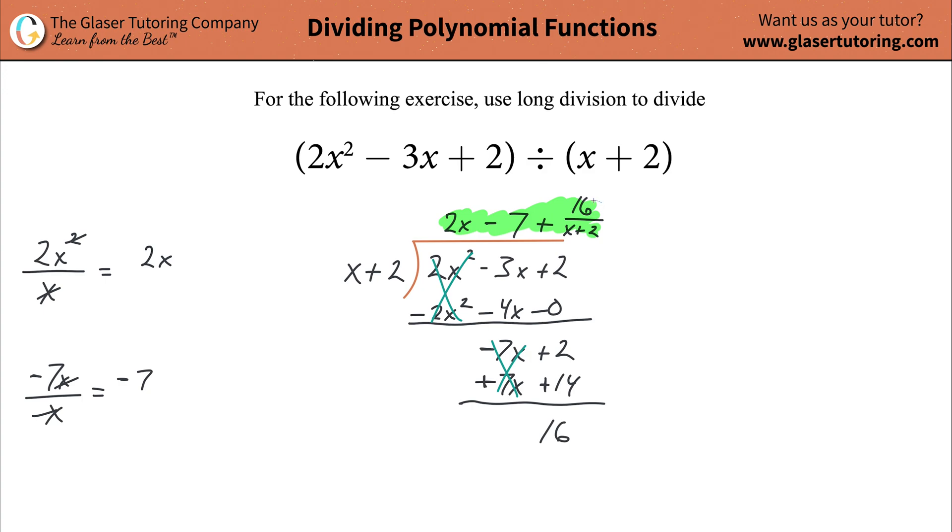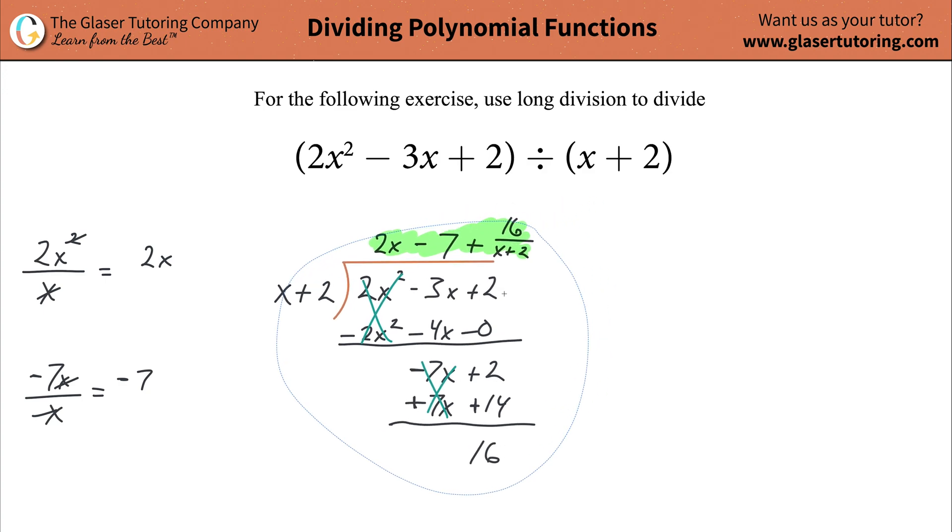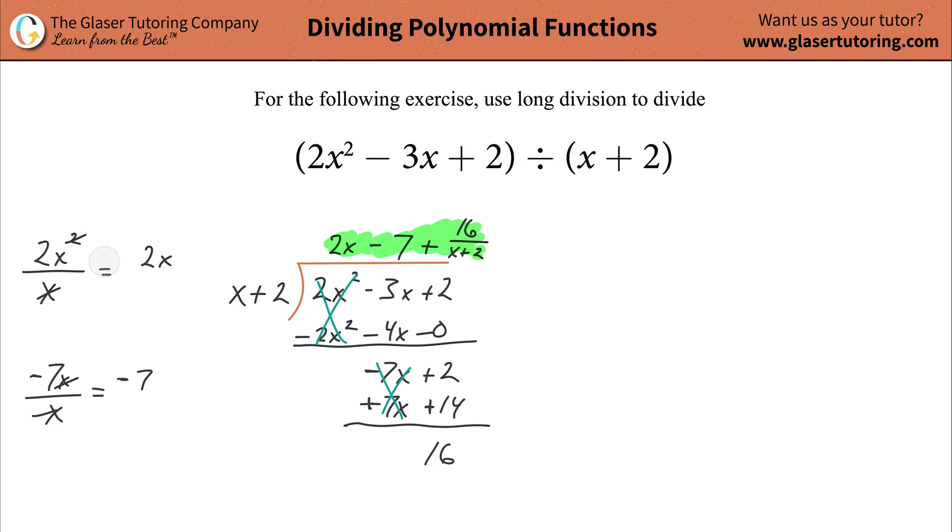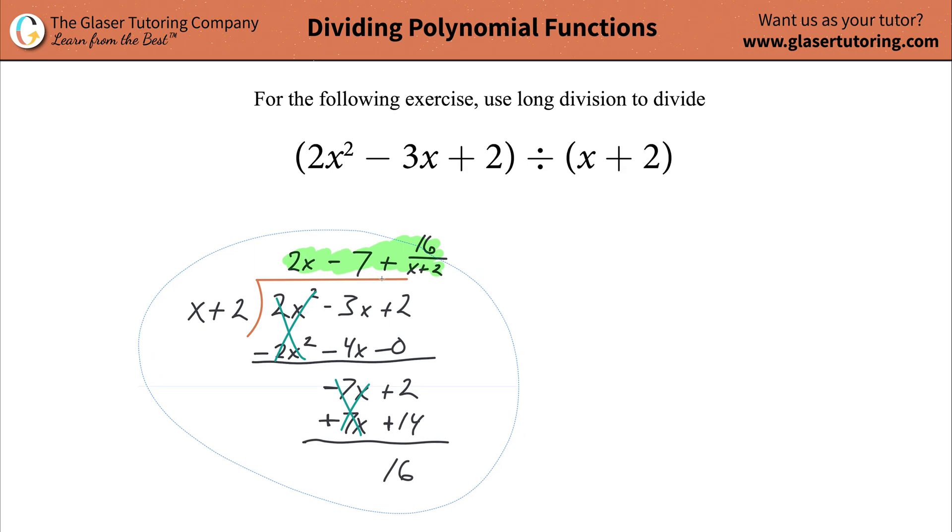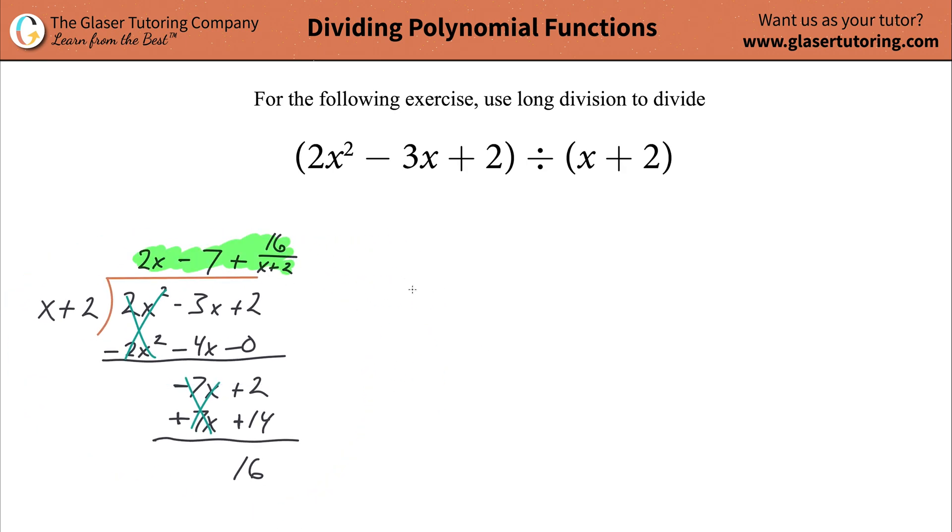Now, what you should do is you should always check your work. Always check your work. It's a good practice, a good habit to get into, if possible. Sometimes it might be more work than necessary, but here I'm going to check it. In other words, what we found here is that we found when we took this polynomial and divided by this, we took our 2x squared minus 3x plus 2, all divided by then x plus 2. We found that the answer is this thing, 2x minus 7 plus 16 over x plus 2.